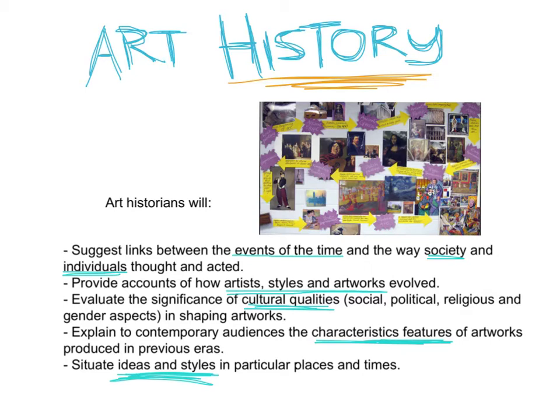In a similar way to a critic, they will provide accounts of how artist styles and artworks have evolved over time, and they will evaluate the significance of culture — social, political, religious, gender — anything that's happening in the world and how that may have shaped the artworks being created at the time. So in a lot of ways it is just history, but a history of art. In order for that to be shaped, they identify particular characteristics within an artwork and link it to a particular time, and that's how we get art movements.